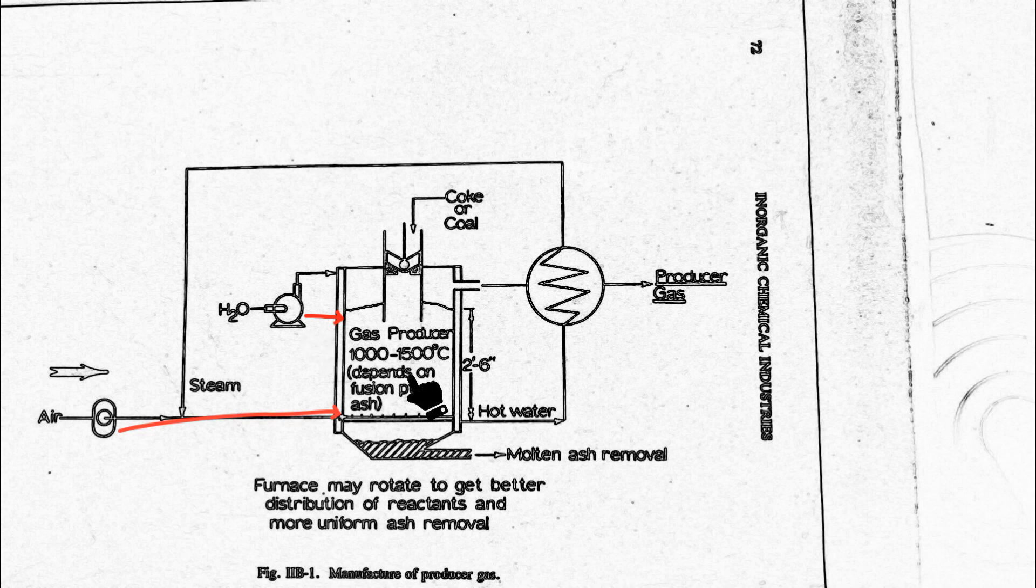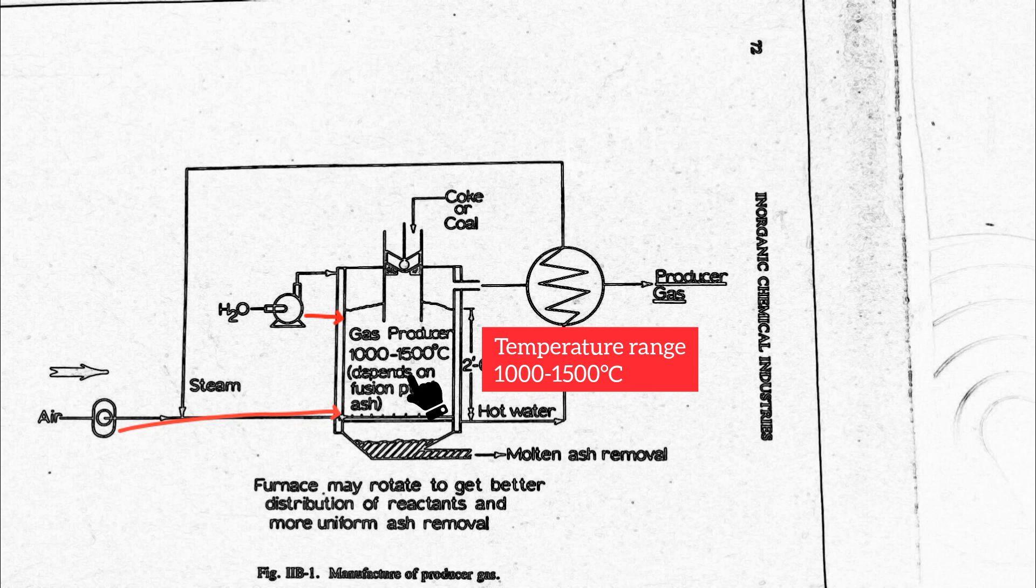Typically the temperature inside the furnace is maintained between 1000 to 1500 degrees Celsius depending on the fusion point of ash.